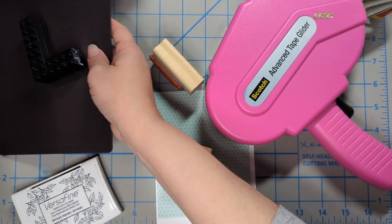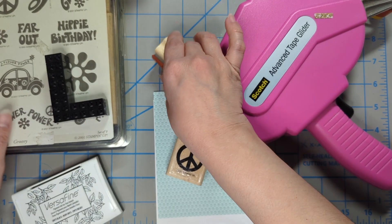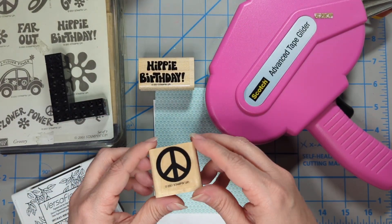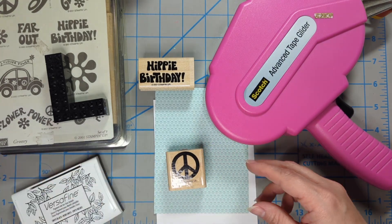Putting that away, I wanted to show you the stamps I picked out. I have this hippie birthday and a little peace sign. I'm not quite sure how I want to lay it out just yet.